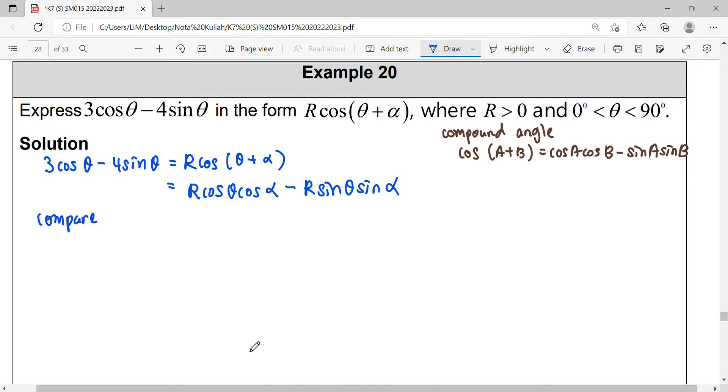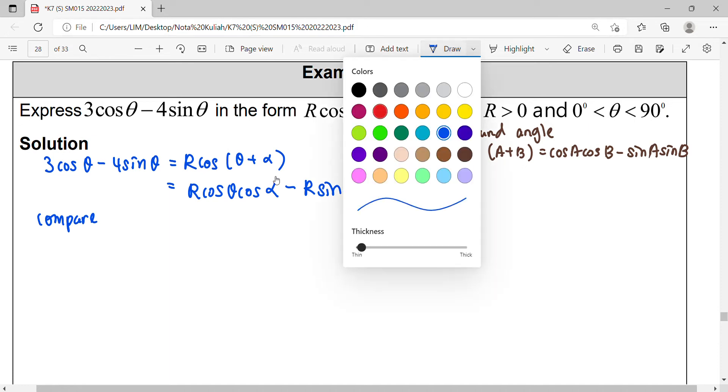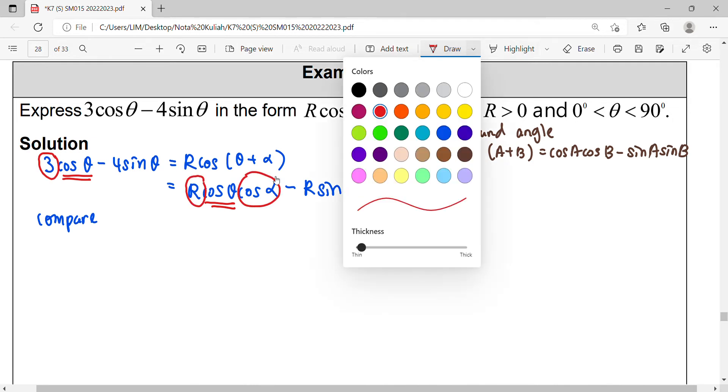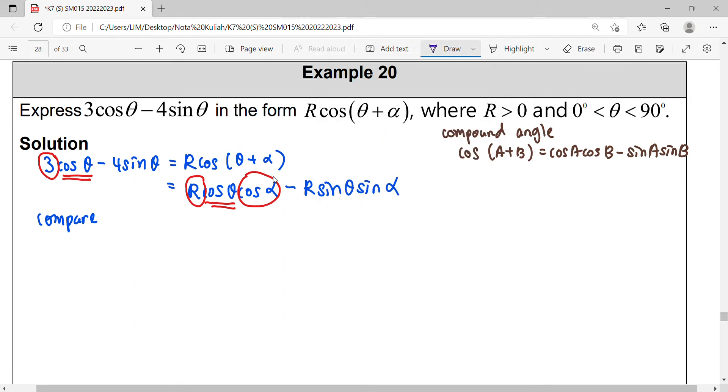In order to find out what is R and α, we need to compare to get two equations. For cosθ, you can see the coefficient of cosθ is 3, so 3 equals R cosα. That will be our first equation.